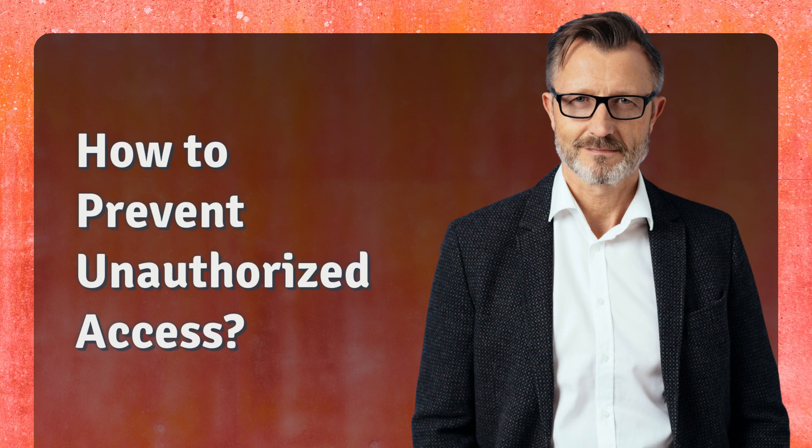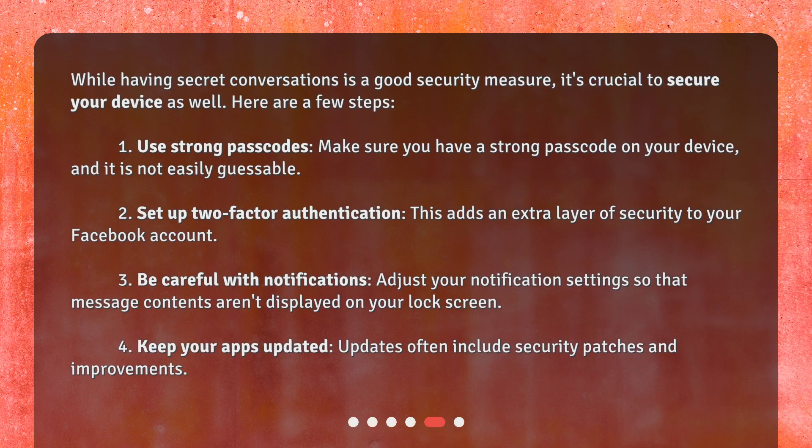How to prevent unauthorized access? While having secret conversations is a good security measure, it's crucial to secure your device as well. Here are a few steps. 1. Use strong passcodes — make sure you have a strong passcode on your device and it is not easily guessable. 2. Set up two-factor authentication, which adds an extra layer of security to your Facebook account. 3. Be careful with notifications — adjust your notification settings so that message contents aren't displayed on your lock screen. 4. Keep your apps updated, as updates often include security patches and improvements.